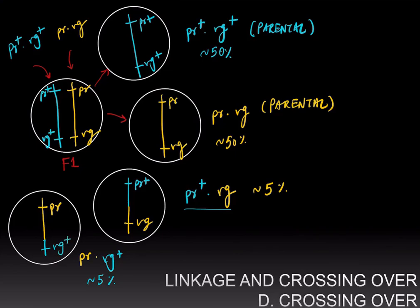In order to obtain these recombinant genotypes, we must exchange genetic material between chromosomes. The process of exchanging genetic material between chromosomes is called crossing over.